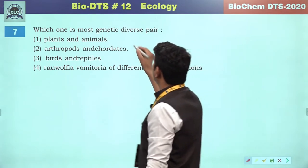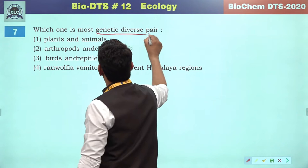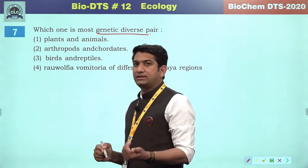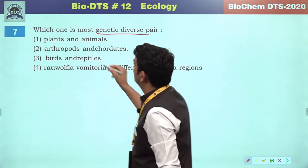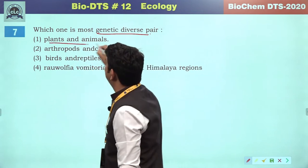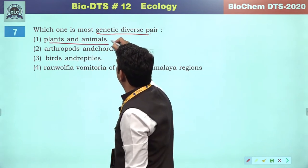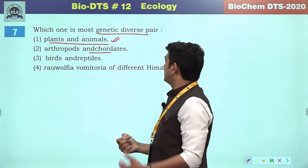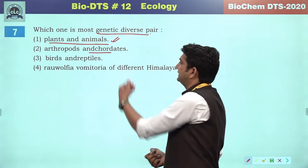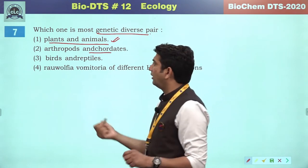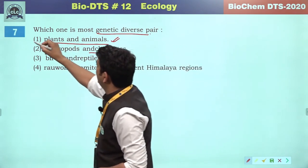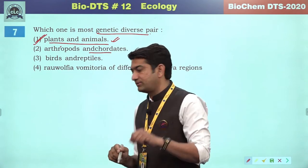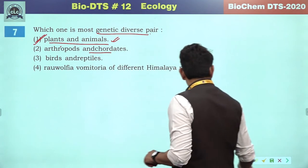Which one is the most genetically diverse pair? From the taxonomic hierarchy perspective, plants and animals give us a kingdom reference. From species to kingdom, the most diverse genetic composition will be at the kingdom level. So the correct answer will be the first option.